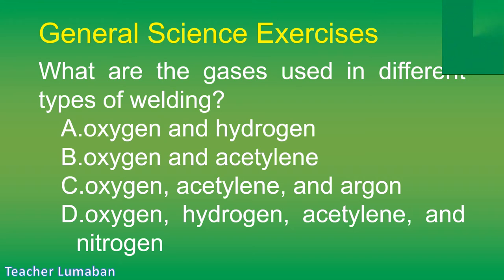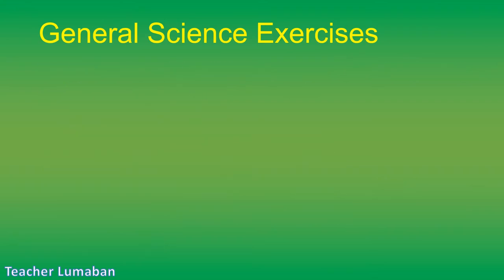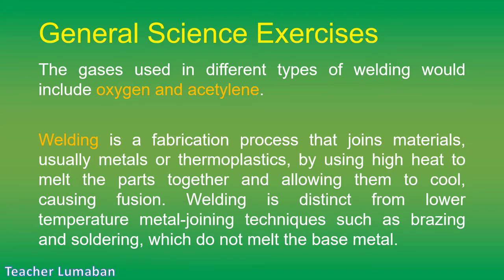The correct answer is Letter B: oxygen and acetylene. The gases used in different types of welding include oxygen and acetylene. Welding is a fabrication process that joins materials, usually metals or thermoplastics, by using high heat to melt the parts together and allowing them to cool, causing fusion. Welding is distinct from lower temperature metal joining techniques such as brazing and soldering, which do not melt the base metal.